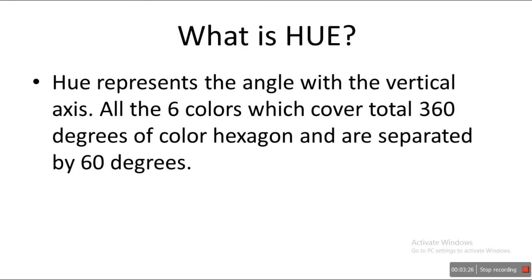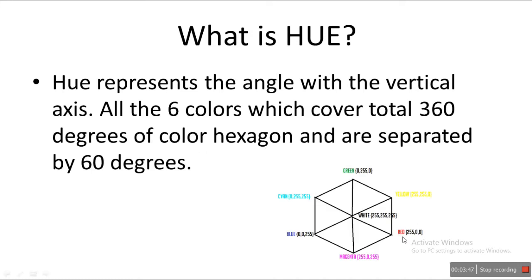So the first question is: what is hue? Hue represents the angle with the vertical axis. All the six colors we covered — red, green, blue, cyan, magenta, yellow — all these six colors have different angles in that hexagon, and they are separated each by 60 degrees. So starting from 0 at red, we get yellow at 60, green at 120, cyan at 180, then 240, then 300, and 360 brings us back to red. So this is hue — the angle at which the color is. For red we write it as 0, yellow as 60, and so on.